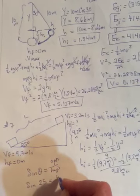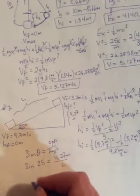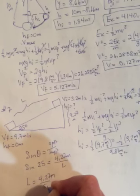is going to equal 4.27 m over the L, the hypotenuse. Rearrange for L. L is equal to 4.27 m over the sine of 25.